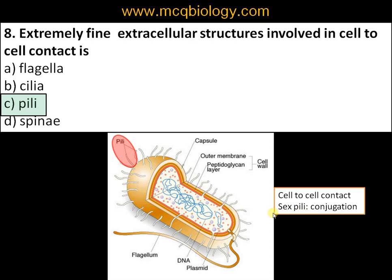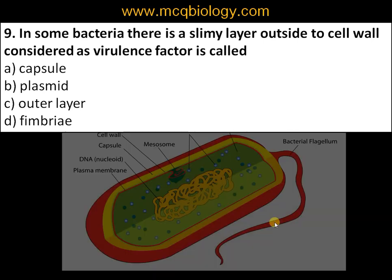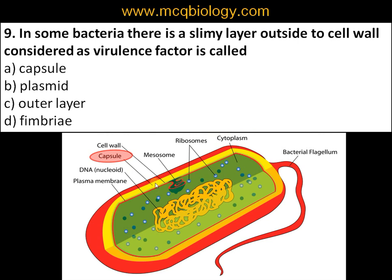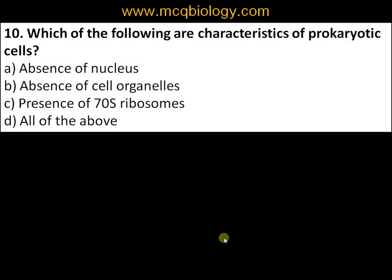Question number nine: in some bacteria there is a slimy layer outside the cell wall considered a virulence factor, called: A) capsule, B) plasmid, C) outer layer, D) fimbriae. This is the capsule layer, seen outside the cell wall in some bacteria. This capsule layer often protects bacteria from desiccation. Capsulated bacteria are more virulent and more pathogenic compared to non-capsulated bacteria.